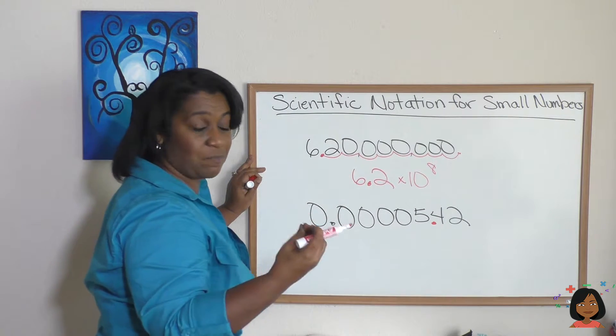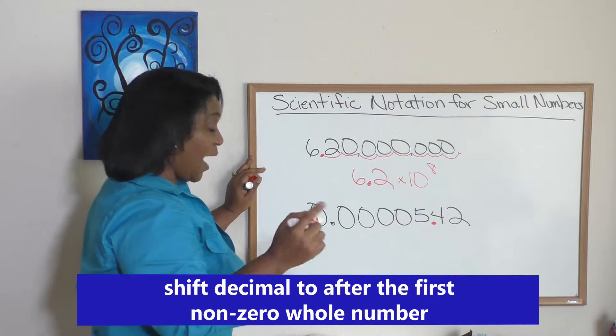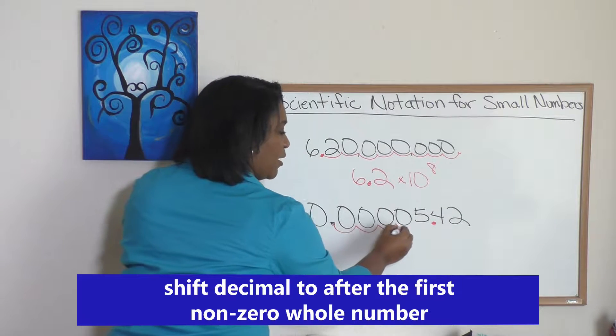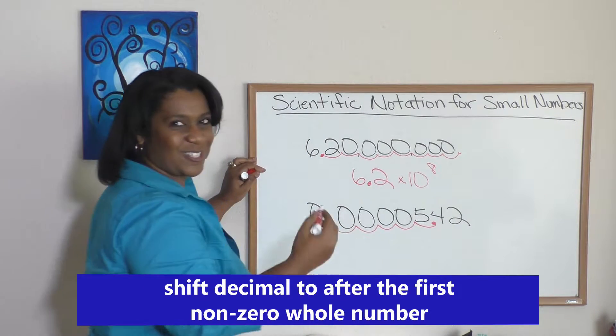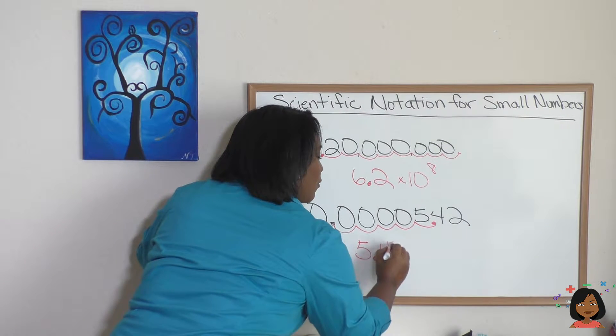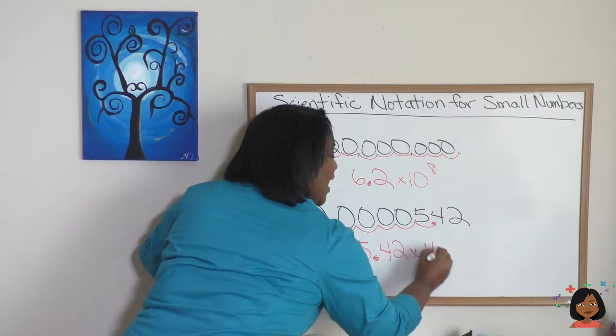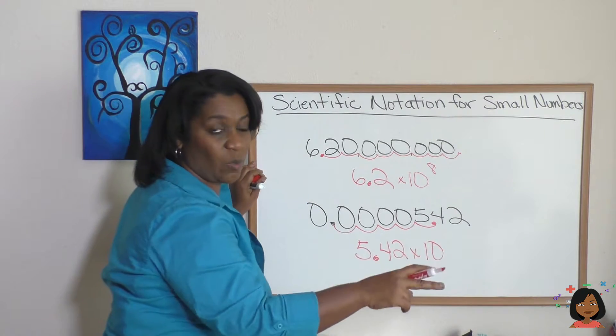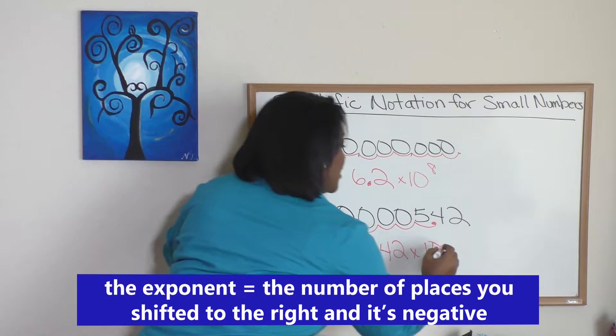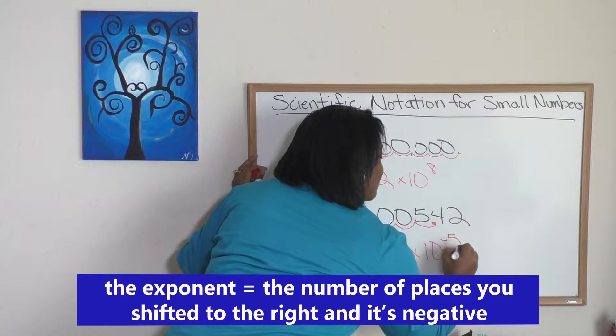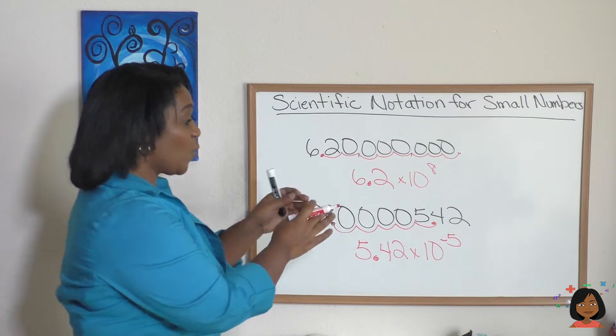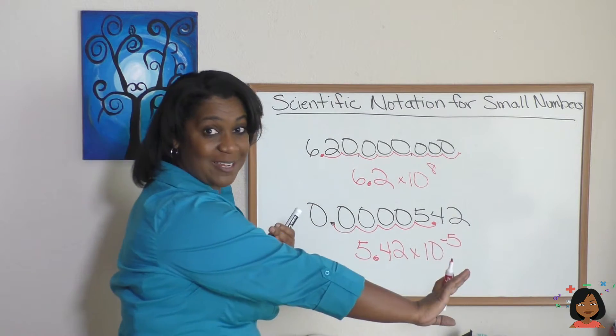So we just want to start with the whole number. Let's move our decimal. How many places to get there? 1, 2, 3, 4, 5. So let's write the number 5.42 times 10. Now since we went to the right, we got smaller, our exponent has to be negative: 10 to the negative fifth. And that tells us we're getting a tiny number, a small number.